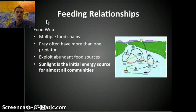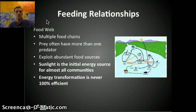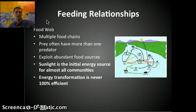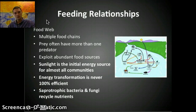A couple of key things to remember: First, sunlight is the initial energy source for almost all communities, providing energy to producers to carry out photosynthesis. Second, the transfer of energy from one food level to the next is never 100% efficient — it's actually extremely inefficient. Third, saprotrophic bacteria and fungi recycle nutrients by breaking down dead things within the ecosystem and releasing those nutrients back into the soil.